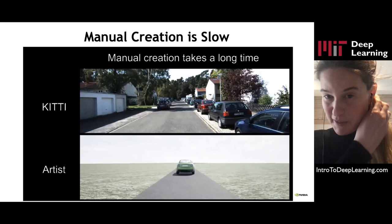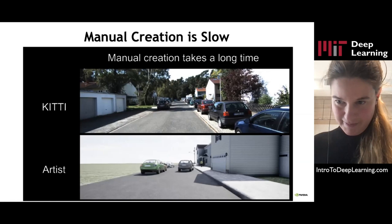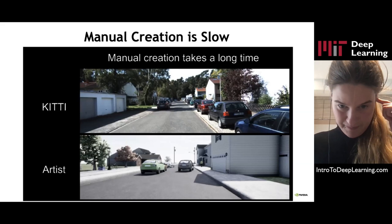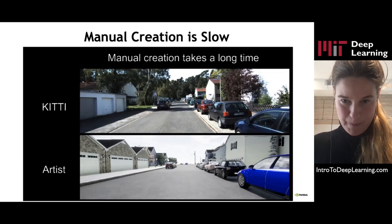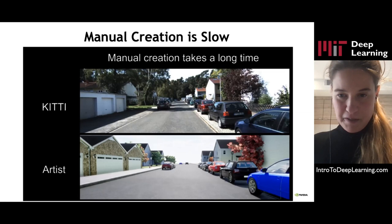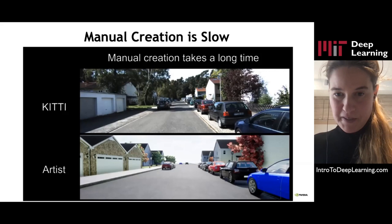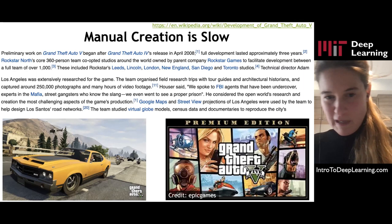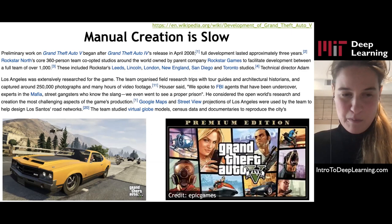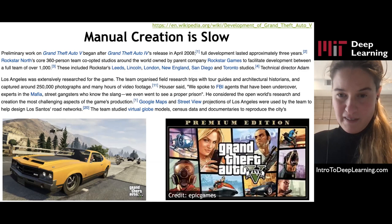It turns out that content creation requires significant human effort. Here we see a person creating a scene aligned with a given real-world image — the artist places scene elements, edits their poses, textures, as well as scene properties such as weather, lighting, and camera position. This process ended up taking four hours for this particular scene, even though the artist already had the assets. And games like Grand Theft Auto required a thousand engineers working for three years, taking 250,000 photographs to recreate Los Angeles.